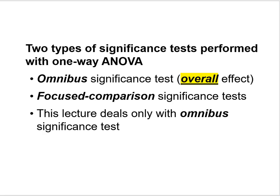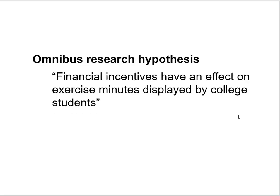When we do one-way ANOVA there are actually two different kinds of significance tests that are performed. There's an omnibus significance test, which allows you to determine whether you have an overall statistically significant effect. The second kind are focused comparison significance tests, which tell you whether there's a significant difference between two specific treatment condition means. This lecture deals only with the omnibus significance test, which is typically the first thing a reader of a research article looks for — they'll look for your F statistic.